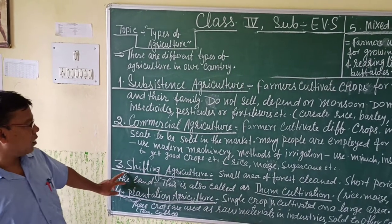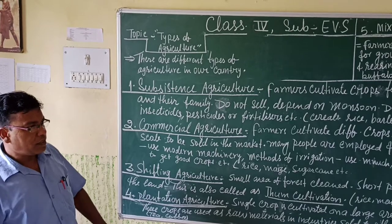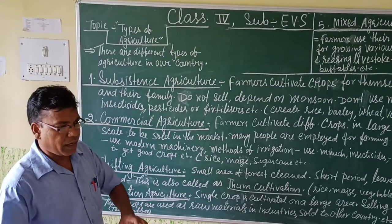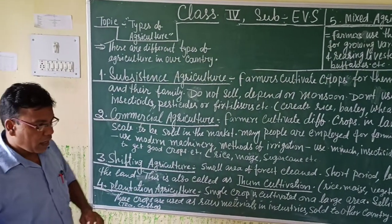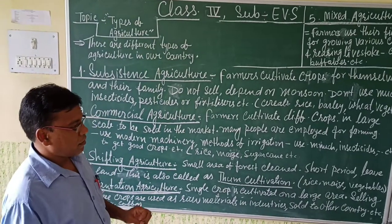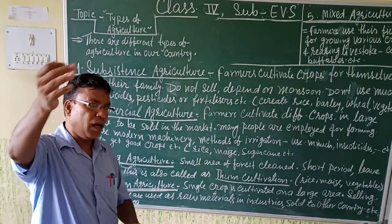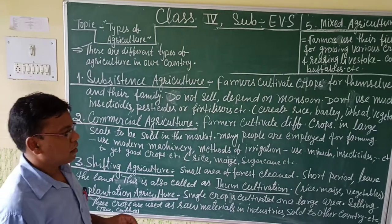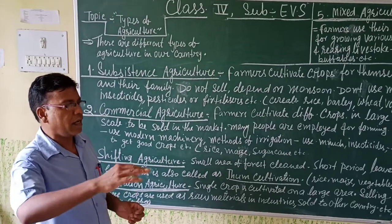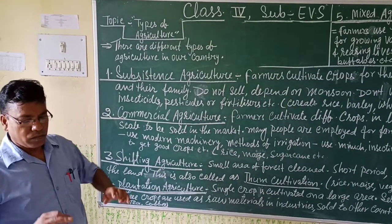Now we shall move to the third point: shifting agriculture. In shifting agriculture, areas of forest are cleared for a short period so that a farmer can raise their crops. After the harvest, the farmer leaves that land and moves to another area. He leaves the cleared land for a year or two, then goes to another place, clears it, and cultivates there.